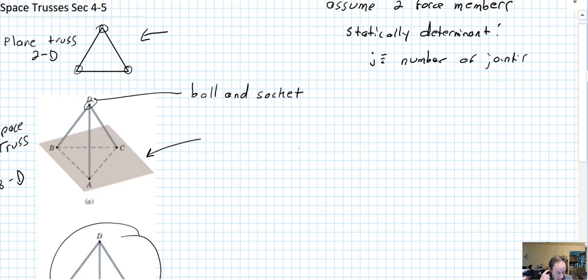And for each joint, equilibrium is specified by three equations. So the number of equations equals 3j. Then just like in the 2D, m is the number of members.